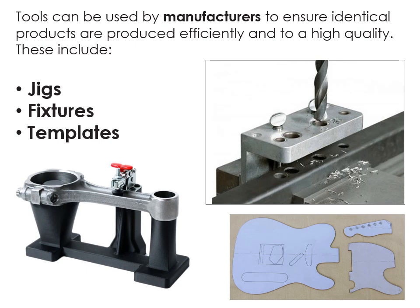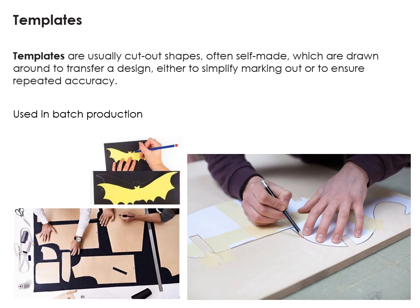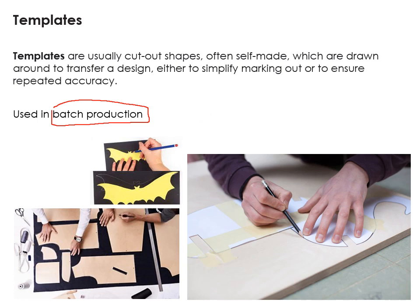We're going to talk through each of the three: templates, jigs, and fixtures. Jigs and fixtures are slightly more complex, but we'll go through each in turn. Templates are predominantly used in batch production — you wouldn't get someone to trace something out hundreds or thousands of times by hand.